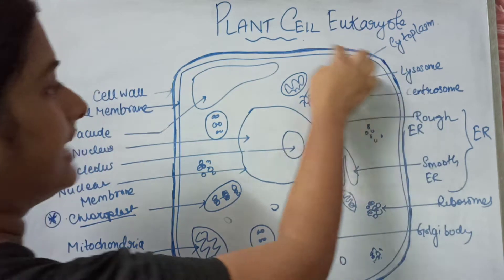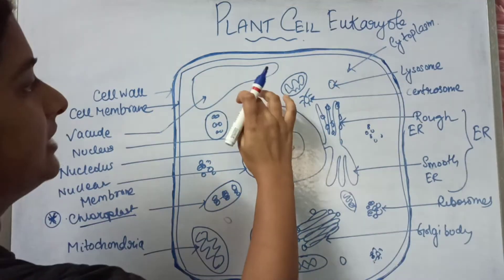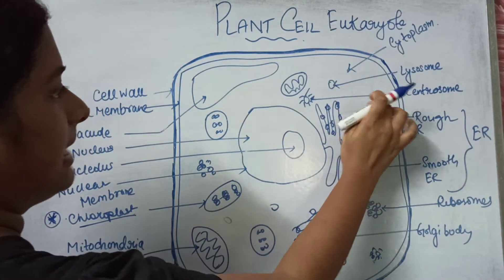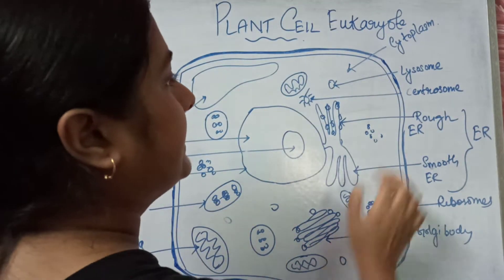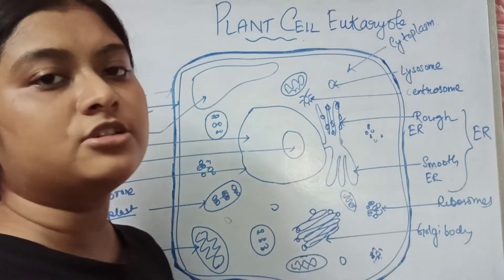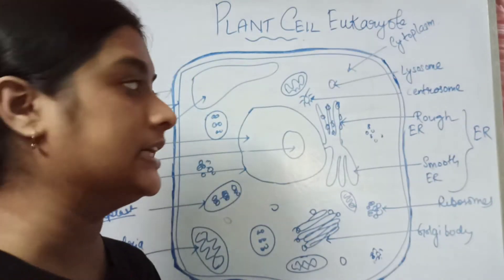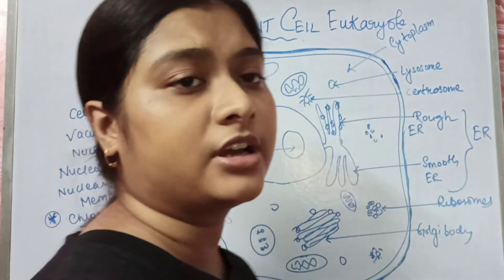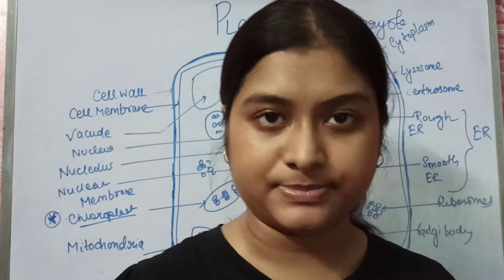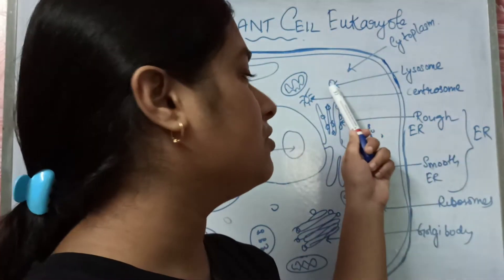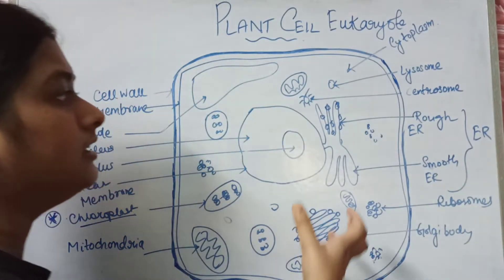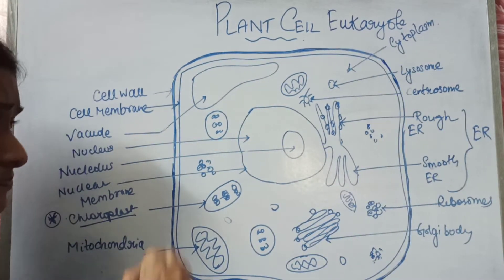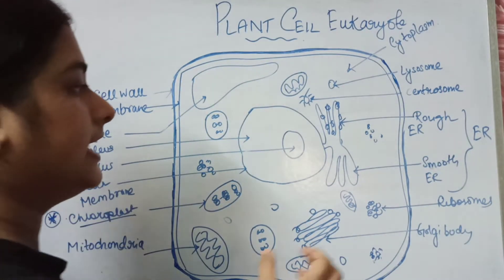The cytoplasm is the fluid-filled matrix space of the plant cell. Then comes the lysosome — lysosomes are special secretory vesicles that contain hydrolytic enzymes. Inside the lysosome there are enzymes, mostly acidic, that help in the digestion of other substances such as carbohydrates. So it helps in digestion.